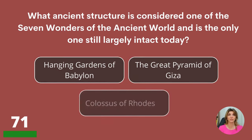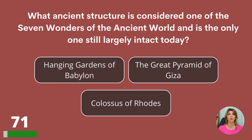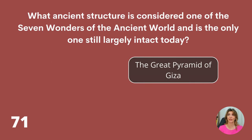What ancient structure is considered one of the seven wonders of the ancient world and is the only one still largely intact today? The Hanging Gardens of Babylon, the Great Pyramid of Giza, or the Colossus of Rhodes? The Great Pyramid of Giza.